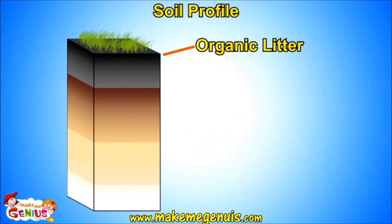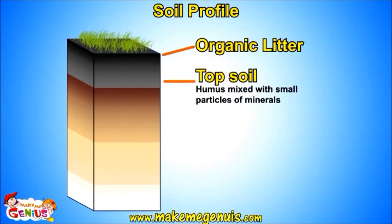The top layer is made up of dead leaves and branches. The second layer is made up of some humus and small particles of minerals. Humus is made up of partially and totally decayed animals and plant parts. Humus contains a lot of nutrients, which are important for plants.